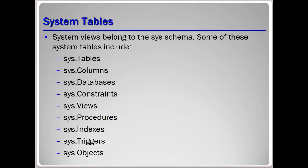When querying system views to verify whether objects you want to drop are in the database, you need to know the most useful system tables. These system views belong to the SysSchema. A schema is a description of the database to a DBMS in the language provided by that DBMS. Important system views include Sys.columns, Sys.databases, and Sys.views, which we'll look at later in the course.